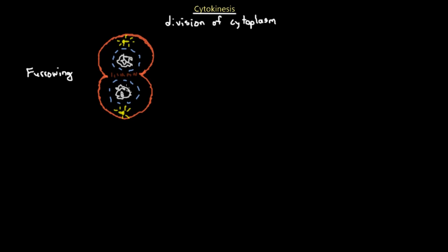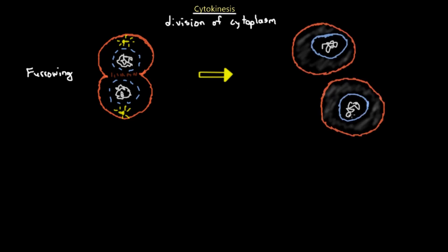Cytokinesis by furrowing involves a furrow in the center of the cell that deepens by contraction of microfilaments tightening around the cell. Think of it like putting an elastic band around a balloon and adding more and more pressure — eventually it creates a structure with strings in the middle splitting the balloon in two. This proceeds to form two daughter cells, each with its own daughter nuclei and chromosomes. Furrowing typically occurs in animal cells.